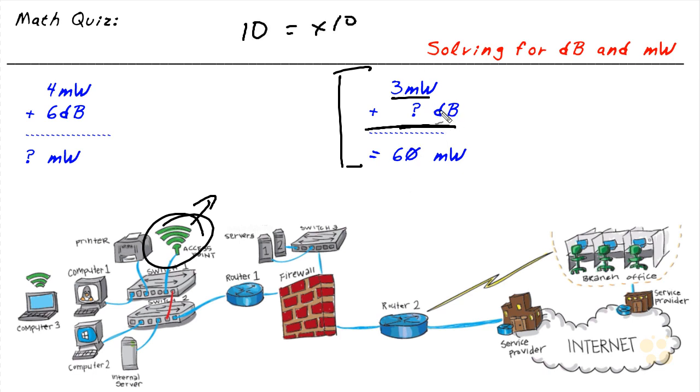So we know that the decibel gain is going to be at least 10. So we take 3 times 10, that would be 30. Another question is, are we going to multiply it again by 10? And the answer is no, that would be way too much, because we're trying to get to 60 milliwatts of transmit power. So we know it's going to be at least 10, and then taking that 30 milliwatts that we currently have, how do we get to 60?